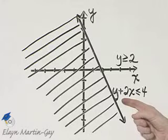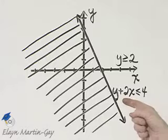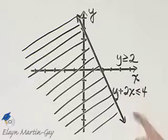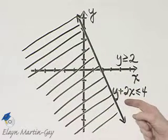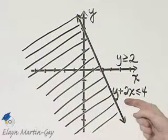Here is one inequality in my system, and I have already graphed it. It is less than or equal to, so a solid boundary line, and I've shaded the half plane where the true solutions lie to this inequality.